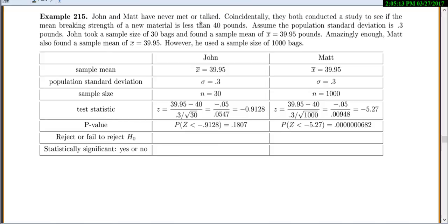And our final example here, John and Matt have never met or talked until they both conducted a study to see if the mean breaking strength of a new material is less than 40 pounds. Now, let's assume the population standard deviation is 0.3 pounds. John took a sample size of 30 bags and found a sample mean of 39.95. Amazingly enough, Matt also found a sample mean of 39.95. Obviously, this is a contrived example. But he used a sample size of 1,000 bags. So, basically, if you look through here, we want to keep everything exactly the same. All we're changing is the sample size. So, we have John and Matt, sample mean, standard deviation, exactly the same. But we changed the sample size.